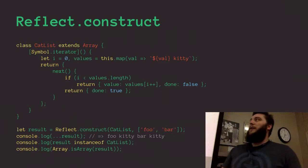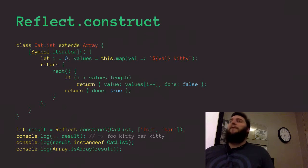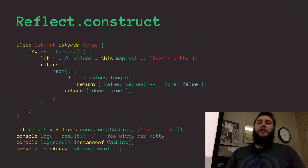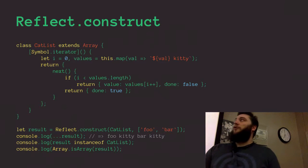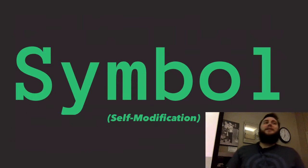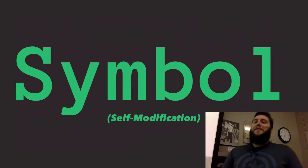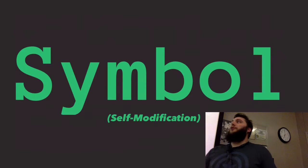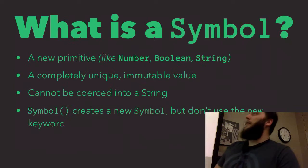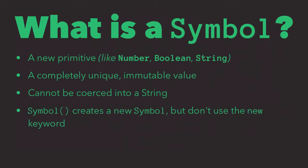Those are some examples of methods provided on the Reflect API, which covers introspection in JavaScript. Another thing is Symbol. Symbols are added to the language, and this allows us to do self-modification — changing constructs in our application to make them work differently. What is a Symbol? It's just a primitive, just like a string, number, or boolean, but it's completely immutable and always guaranteed to be unique — except when it's not, which I'll talk about.